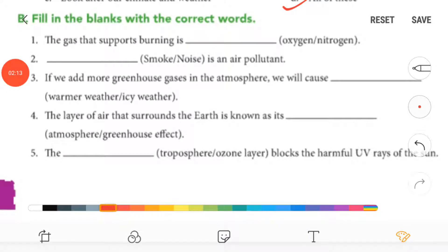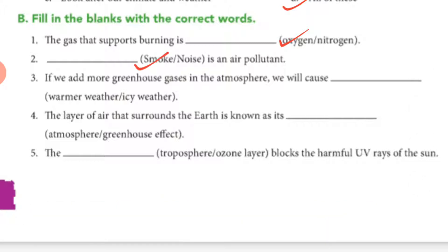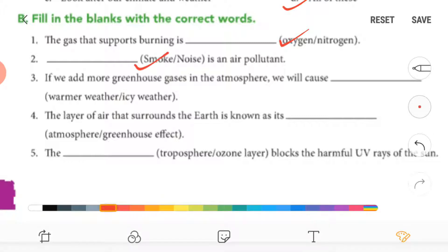Fill in the blanks with the correct word. So first one, the gas that supports burning is oxygen. Second, this is an air pollution, the answer is smoke. Third, if we add more greenhouse gases in the atmosphere we will cause warmer weather.